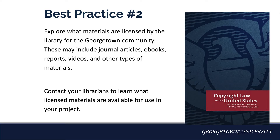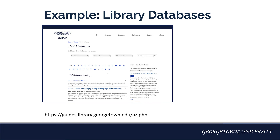Explore what materials are licensed by the library for the Georgetown community. These may include journal articles, ebooks, reports, videos, and other types of materials. Access to these materials is limited to members of the Georgetown community with net IDs and passwords, so this is a good choice for class projects or other internal uses. For the main campus, you can locate our licensed databases using the A to Z databases guide. The Georgetown Law Library and Dahlgren Memorial Library have similar guides for the law and medical communities.